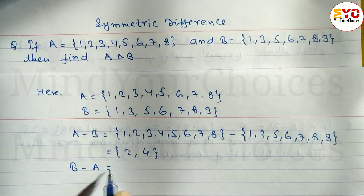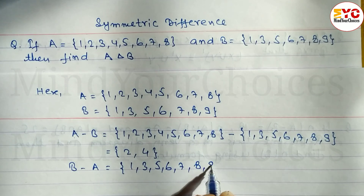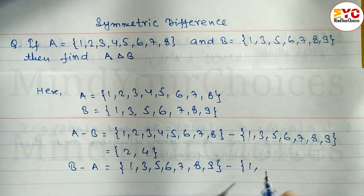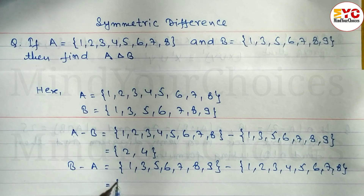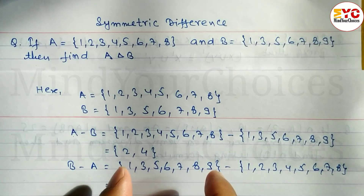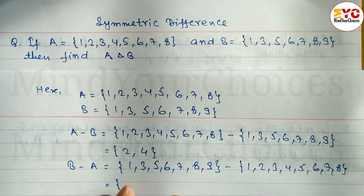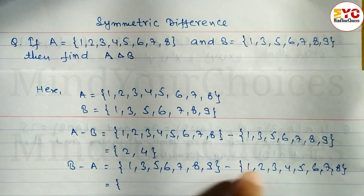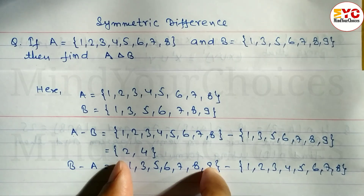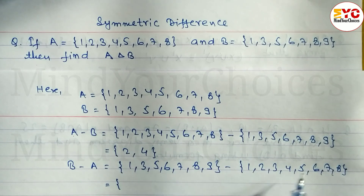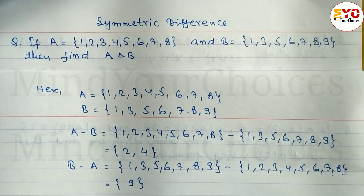Similarly, we have to find out B minus A. Set B = {1, 3, 5, 6, 7, 8, 9} minus set A = {1, 2, 3, 4, 5, 6, 7, 8}. The elements remaining in set B we write; elements remaining in set A we ignore. So: 1 cancels, 3 cancels, 5 cancels, 7 cancels, 8 cancels. 9 is in B but not in A, so we write 9. 2 is in A but not in B — no need to write it since we are subtracting set A. So B minus A = {9}.